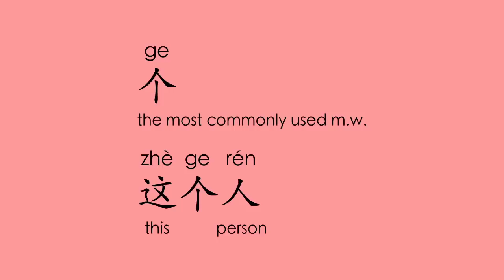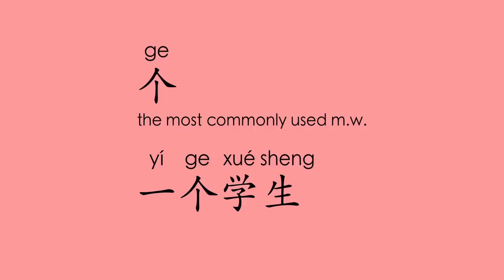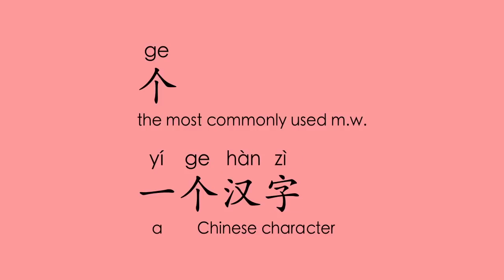这个人 (this person), 那个人 (that person), 几个人 (how many people). We can also say 一个学生 (a student), 一个朋友 (a friend), 一个汉字 (a Chinese character).